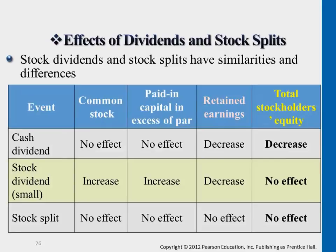For cash dividends, only retained earnings decreases, and total equity decreases after giving out cash. Stock split is the easiest — it absolutely has no effect toward any dollar amount under the equity section. Common stock number stays the same, paid capital and retained earnings number stays the same, total equity stays the same, because we're just splitting it for the number of shares. The number of shares is different but the total amount is the same.